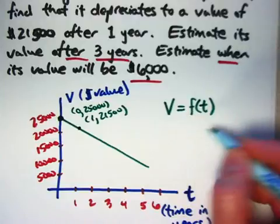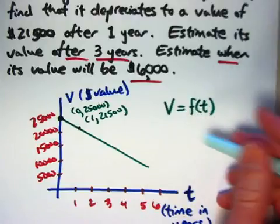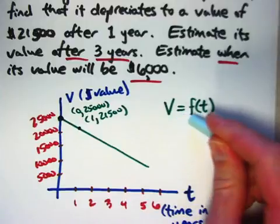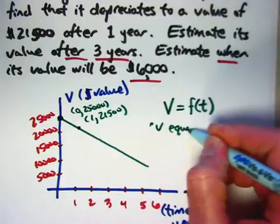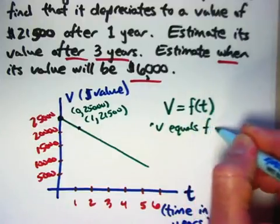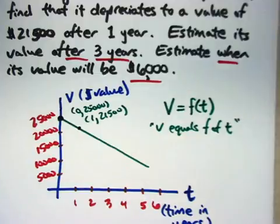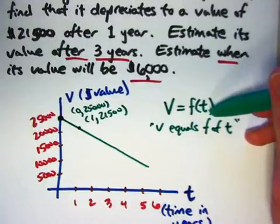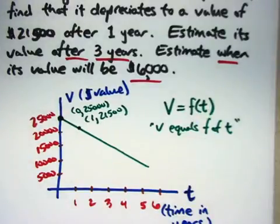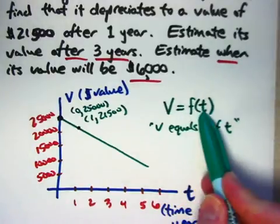When you see this kind of symbolism where f represents a function, you say v equals f of t. In a sense, you can pretend that f of t is just an expression that sort of is hiding some formula, and I'd like to find a formula for f of t that's going to tell me how to figure out the value based on the time.